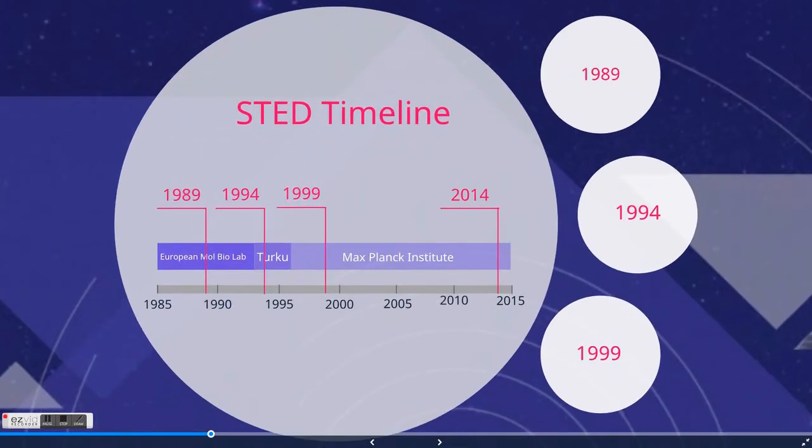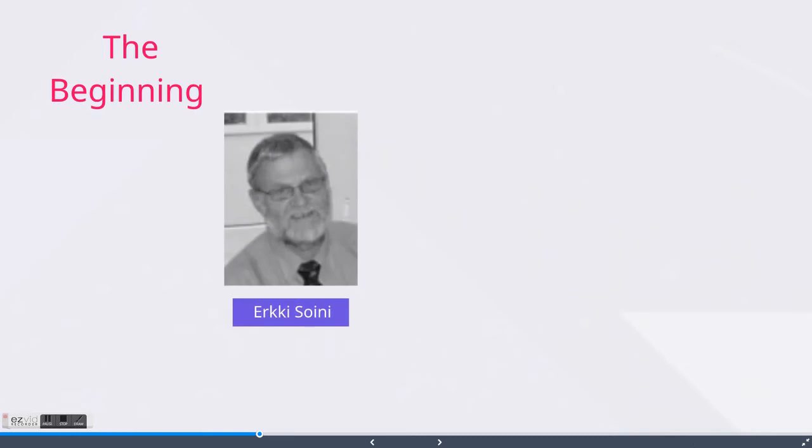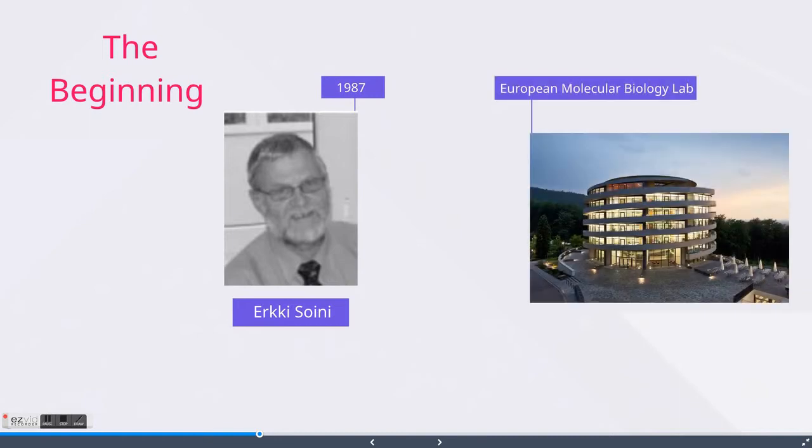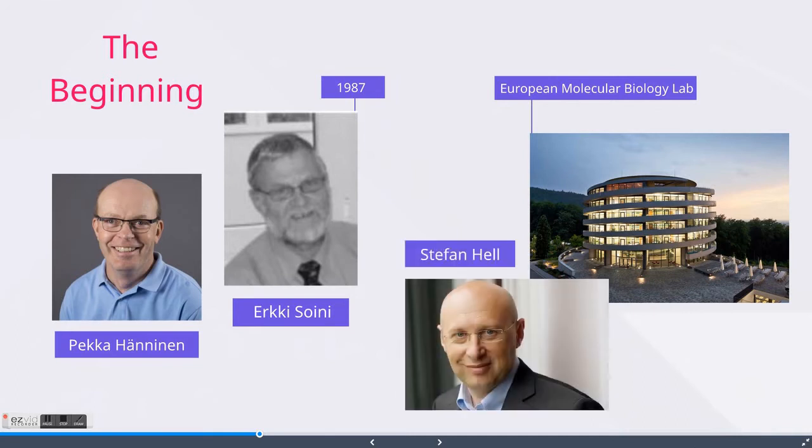Scientists have also tried to break the barrier for a few decades now, and it started in the 80s. A professor called Soini at Turku University in Finland was working on electron and confocal microscopy at the European Molecular Biology Lab. He recruited other people, Hainanen and another fellow called Stefan Hell to tackle this problem with him. They wrestled with it for a few years before Stefan Hell returned to Turku University with a controversial idea that not only is it possible, but it's also feasible to break the diffraction barrier.